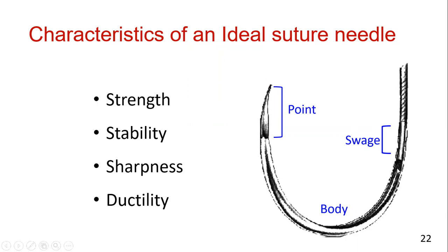This is the part where we apply the needle holder. This principle is called grasping from two-thirds from the tip of the needle, so that the needle holder can easily grasp. It is stable in the grasp of the needle holder.